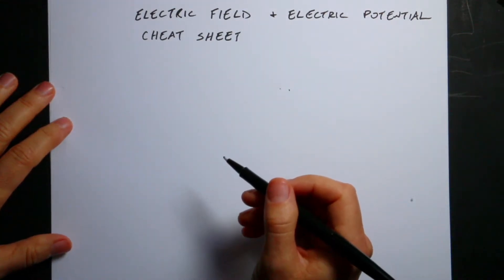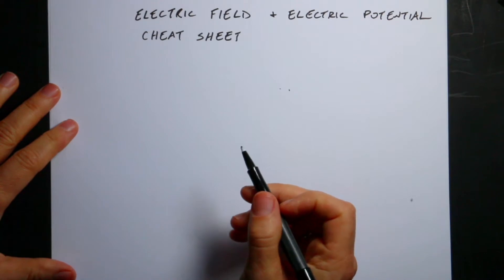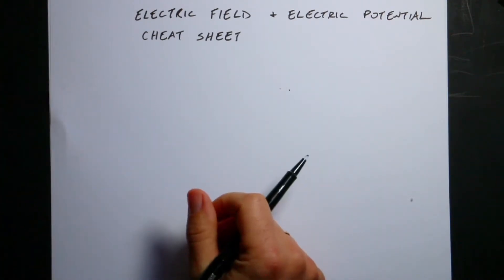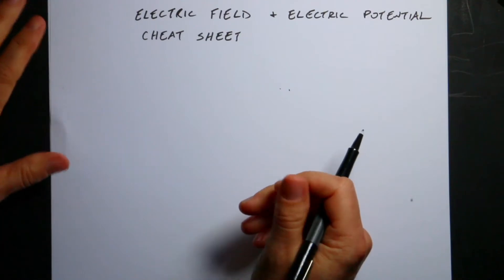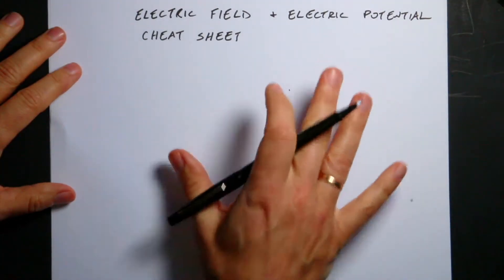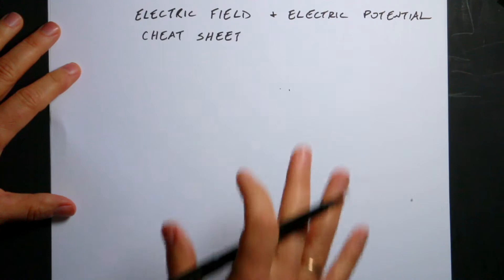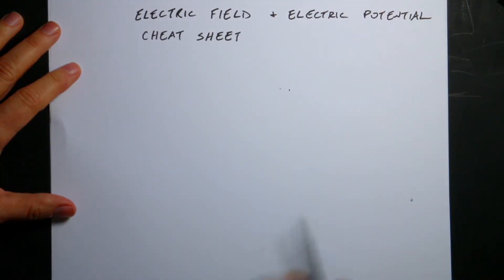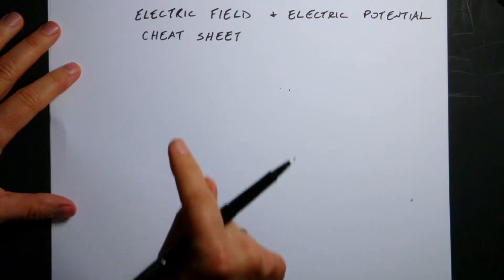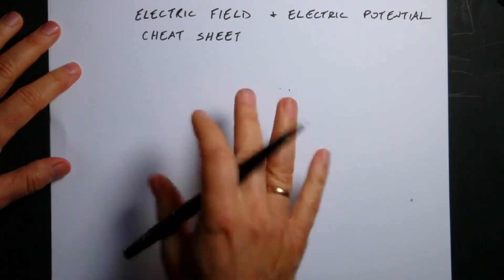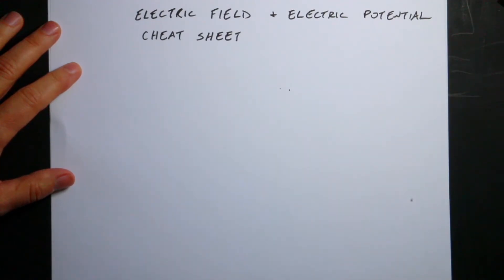Let's say you have a physics exam and they say you can bring in your own cheat sheet. I've been teaching physics for 25 years so I already remember these things, but if you're new you do have to write them down. I'm going to write down the things I would recommend you put on your cheat sheet to help you do great at physics — specifically for a test on electric field and electric potential. I'll include stuff about Gauss's law at the end.